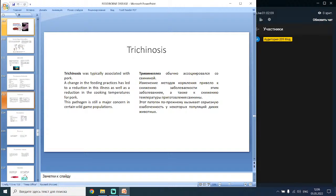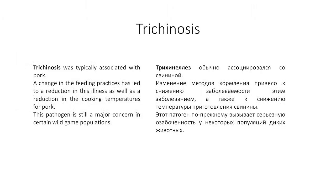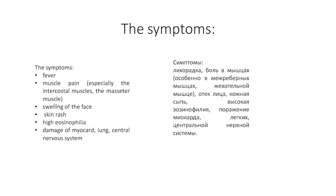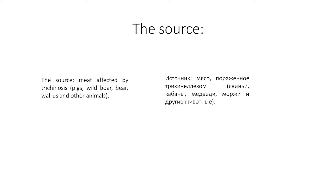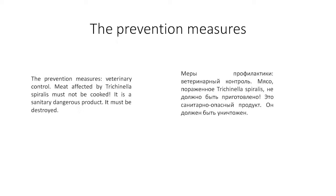Trichinosis was typically associated with pork; a change in feeding practices has led to a reduction in this illness as well as a reduction in the required cooking temperatures for pork. This pathogen is still a major concern in certain wild game populations. Symptoms include fever, muscle pain especially in the intercostal muscles, facial swelling, skin rash, and damage to the myocardium, lung and central nervous system. Meat affected by trichinosis includes pigs, wild boar, bear, walrus and other animals. Prevention measures include veterinary control; meat affected by Trichinella spiralis must not be eaten — it is a sanitary hazard product and must be destroyed.